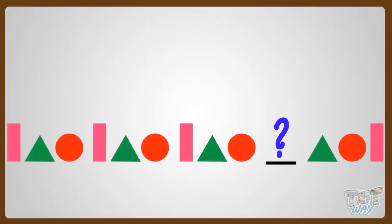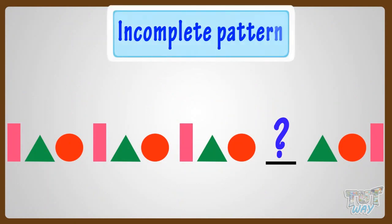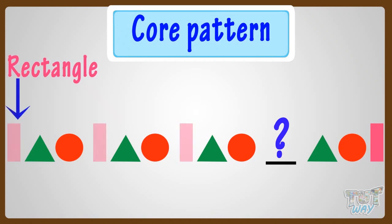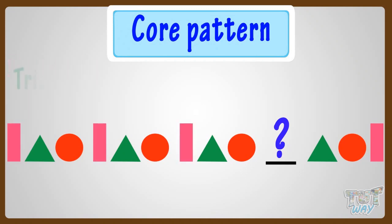This is my first incomplete pattern. Let's find out the core pattern first. The pattern that is getting repeated here is called the core pattern. So the pattern that's getting repeated here is a rectangle, then a triangle, and then a circle.